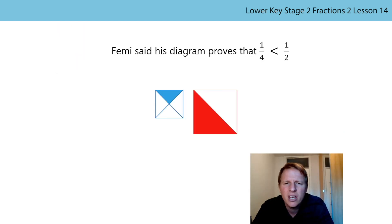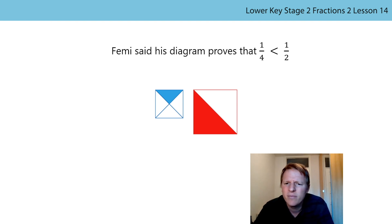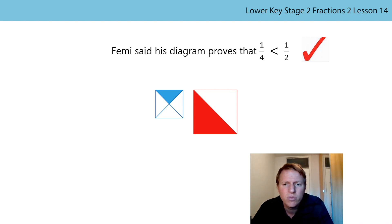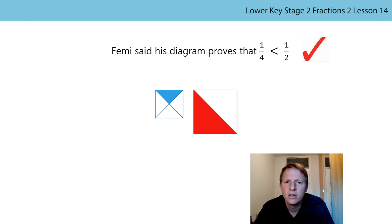What do you think about what Femi has written? Femi says his diagram proves a quarter is less than a half. If you were a teacher, would you tick the picture and the statement? The statement is correct — when comparing unit fractions, the greater the denominator the smaller the fraction, and four is greater than two so a quarter is smaller than a half. But does his diagram actually show that? Would you ask him to redraw part of his diagram?